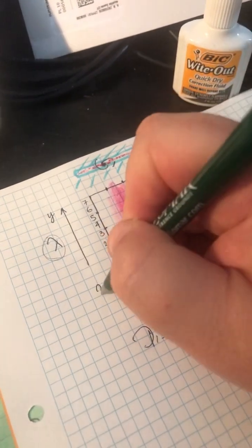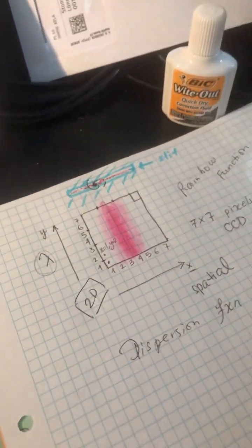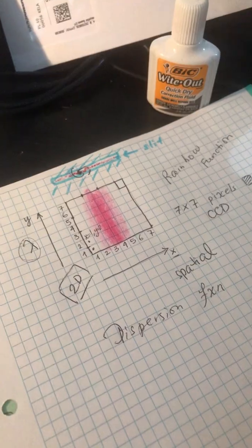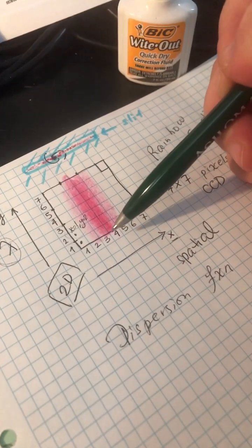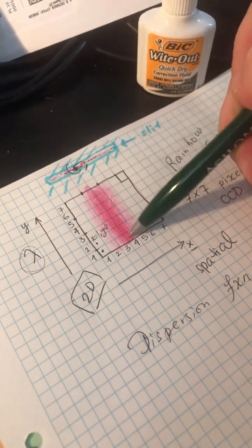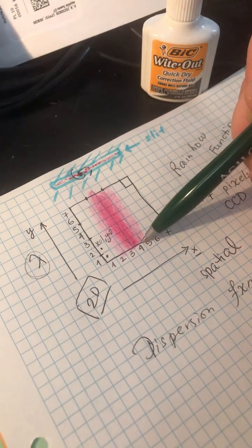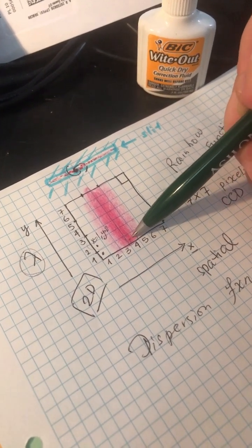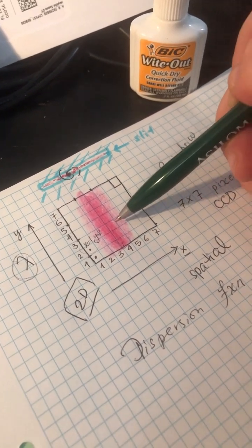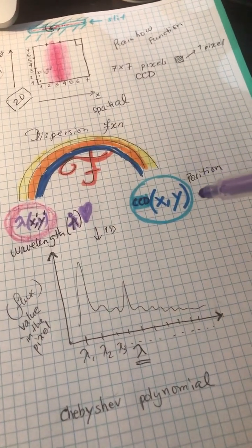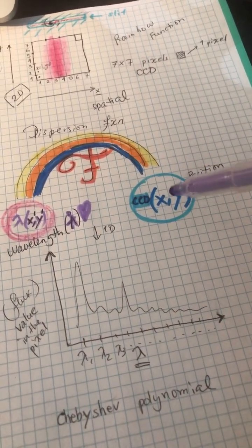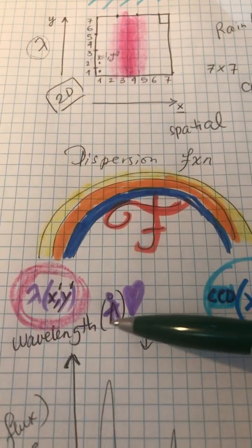The dispersion function will allow you to identify what the (1,4) pixel represents in terms of wavelengths, and (2,4), and (3,4). So your rainbow function gives you a transformation between XY CCD coordinates to wavelengths in angstroms.